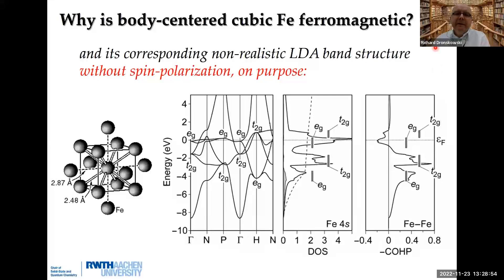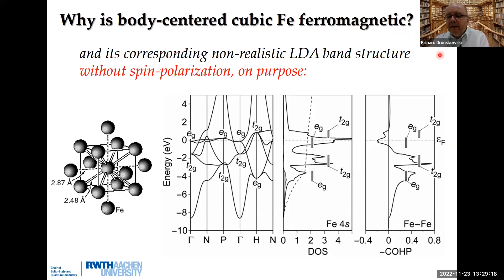Another example that may be interesting for people from solid-state physics: why is body-centered cubic iron ferromagnetic? That's a simple question usually not answered in chemistry lectures. Solid-state physics textbooks give non-chemical explanations based on exchange energy, potential energy, and kinetic energy. As a result, it is practically impossible to make a new itinerant magnet on purpose. The solution to this is very simple.